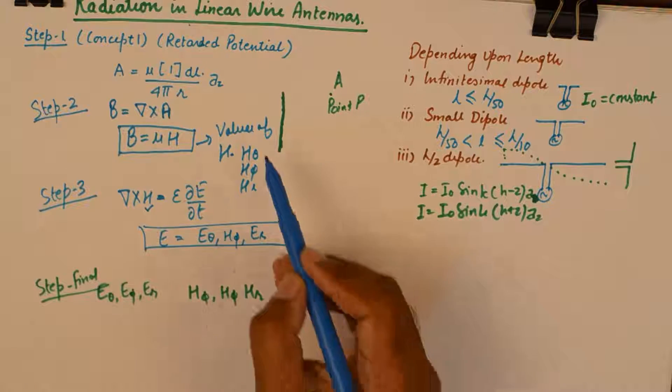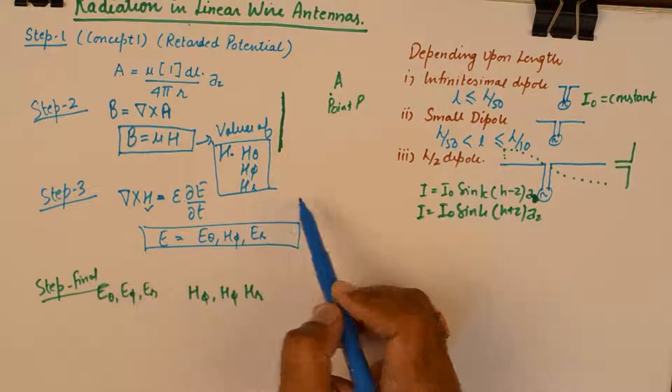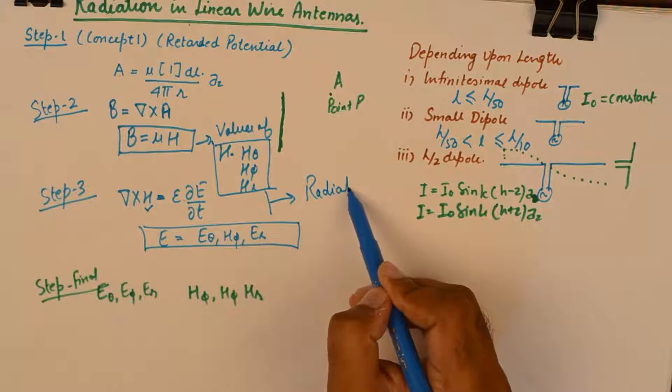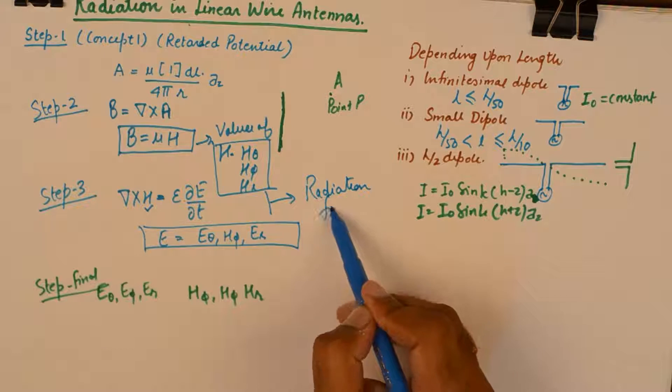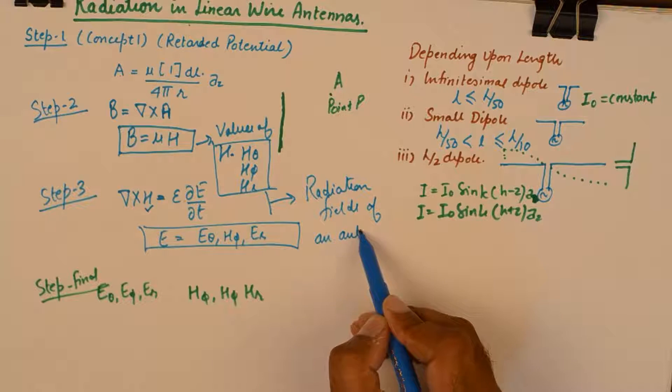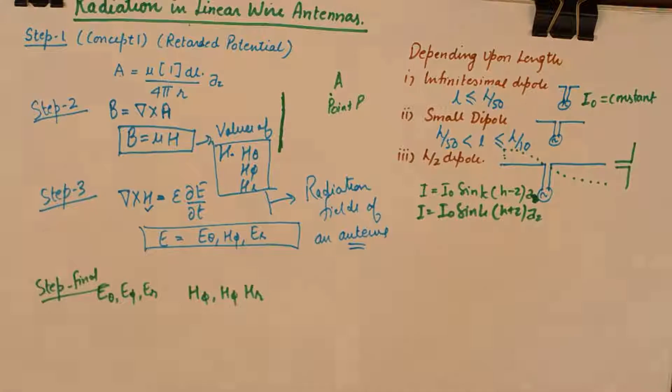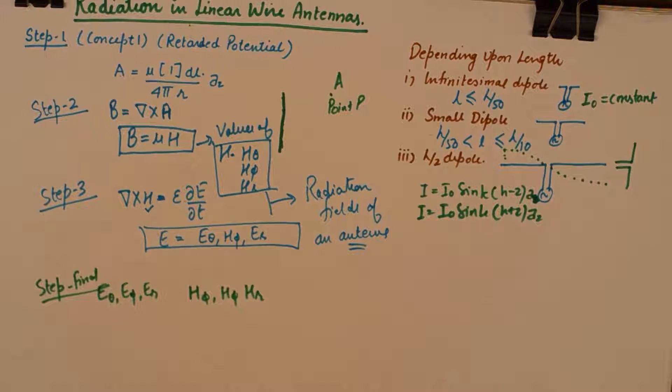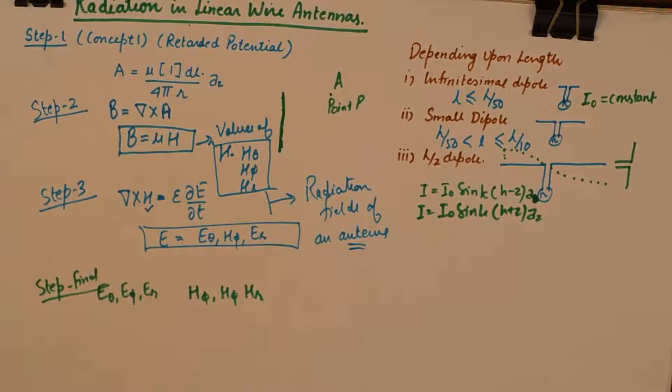That is how we find the radiation fields for an antenna. That is how we mathematically analyze the values of electric field intensity and magnetic field intensity at distant point from an antenna.